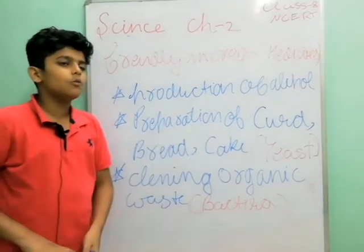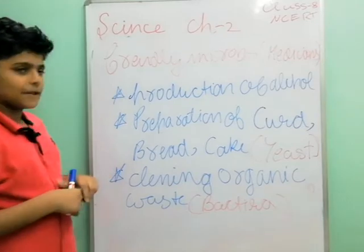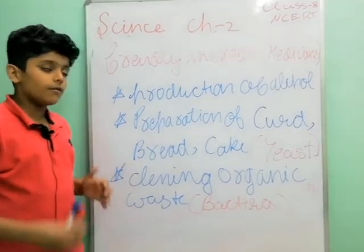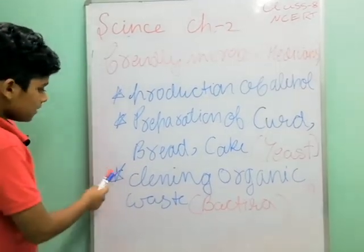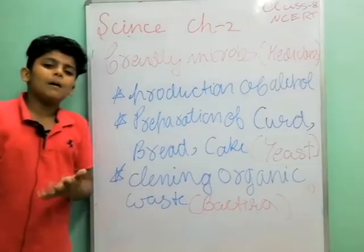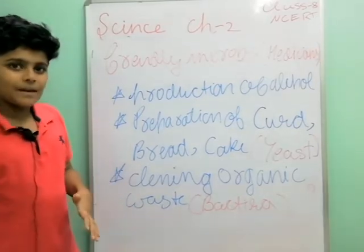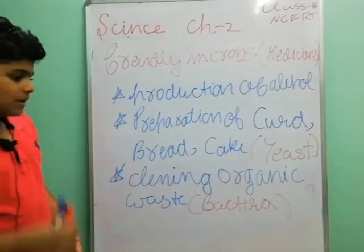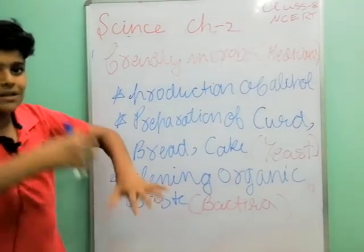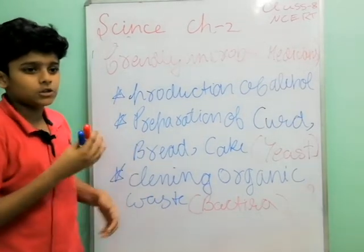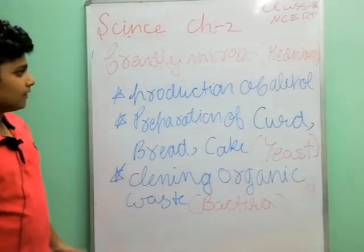For the production of curd, bread and cake — yeast is used. The next topic is the making of bread and curd, which we will cover. Also, cleaning from organic waste: when bacteria and microbes work on organic waste, they make compost, which we also make.